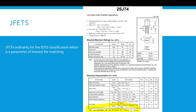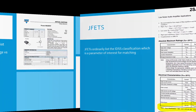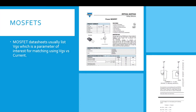JFETs ordinarily list the IDSS classification, which is a parameter of interest for matching, highlighted here. MOSFETs are often matched also, and MOSFET datasheets usually list VGS, which is a parameter of interest for matching using VGS versus current.